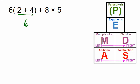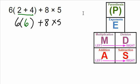So 2 plus 4 is 6, and I'm going to rewrite everything else just as it is. So in the parentheses we have 6, giving us 6 plus 8 times 5. Do we have any more parentheses? We solved everything in the parentheses. We have no exponents, but we do have some multiplication. What do we say happens when we have a number next to parentheses? That means we're going to multiply. So this is a multiplication problem, and we solve the one to the left first. So 6 times 6 is 36.